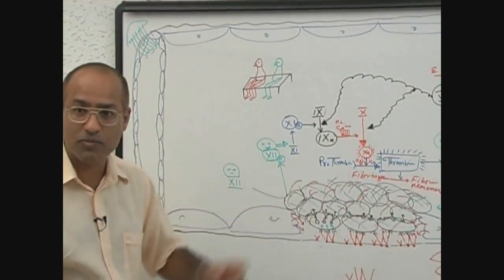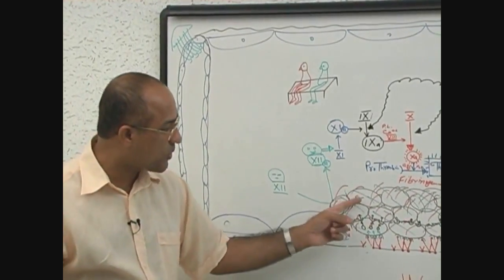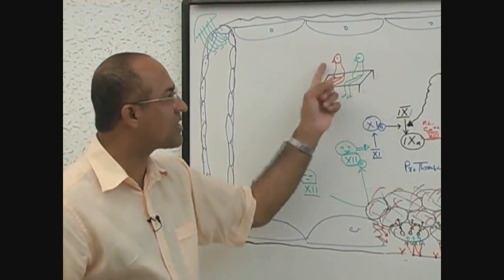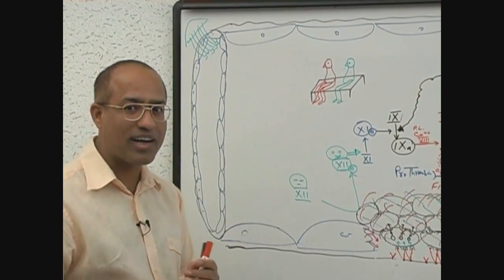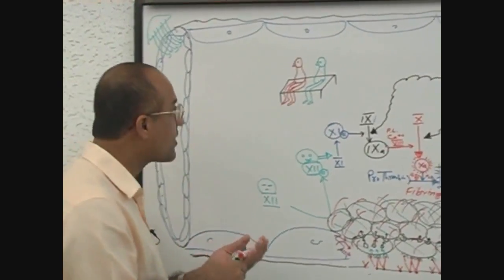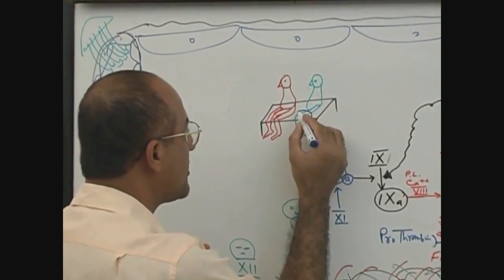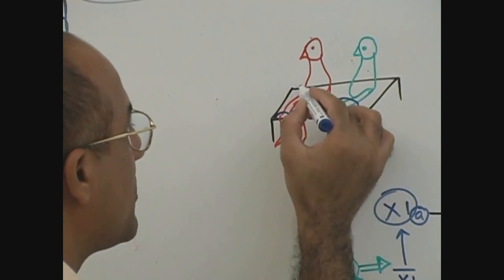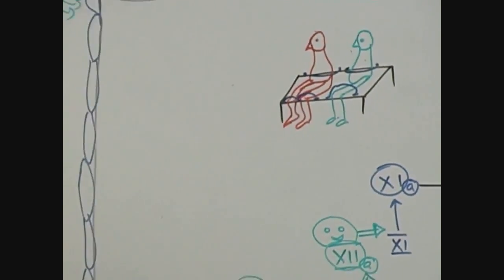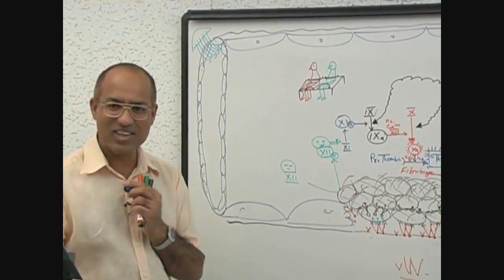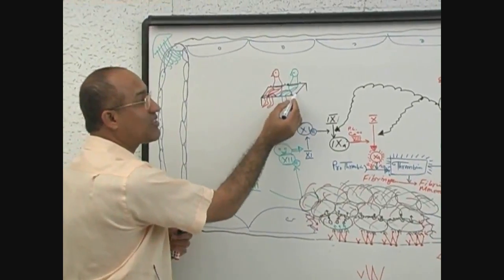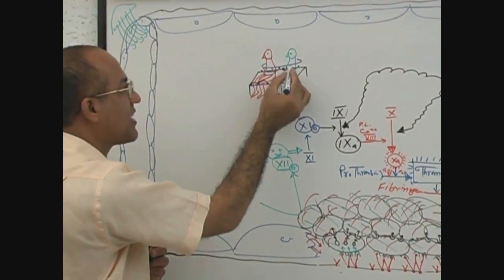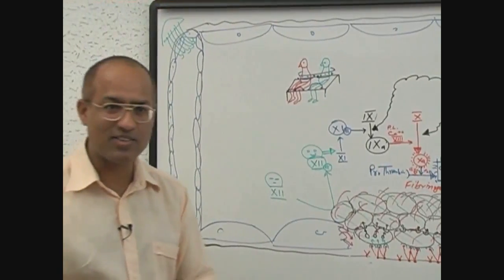That is why we say there should be phospholipid. This phospholipid membrane is the surface provided by the platelets. Factor 9 and factor 10 are sitting on the platelet. Secondly, don't let them run away. What should we do? We should make a very special type of... what is this? Calcium. Calcium is interacting between the phospholipid and coagulation factors. This is the calcium which holds everything together and stabilizes the complex.